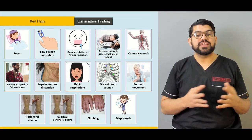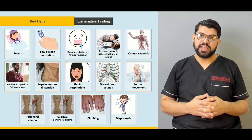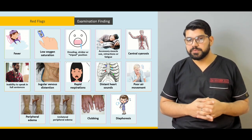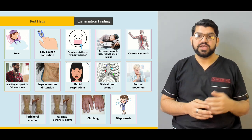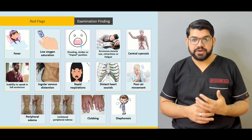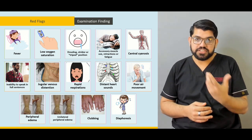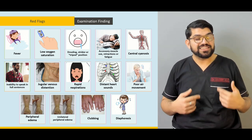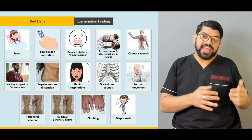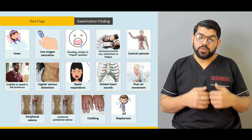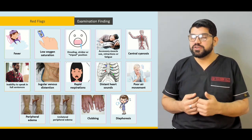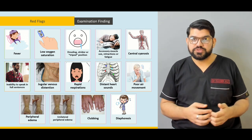Next we'll talk about some of the examination findings in a patient presenting with shortness of breath — for example, fever, oxygen levels, foreign body ingestion, inspiratory stridor, and muscle retractions. These are signs which can tell you if this patient could go into respiratory failure within no time if not treated.